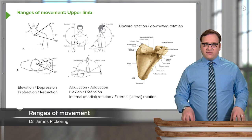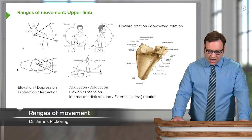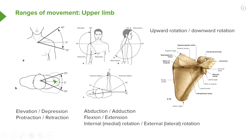To finish, I just want to talk about the various movements that are allowed to occur at the upper limb. Here we can see various movements occurring at the various joints. At the sternoclavicular joint, which allows a whole wide range of movements, we have its ability to elevate and depress the upper limb — elevation and depression. We also have protraction and retraction, where the upper limb is allowed to move forwards and then backwards. These movements occur at the sternoclavicular joint.